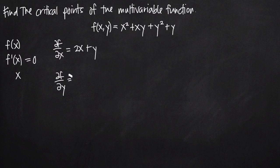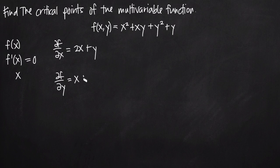For the partial derivative of f with respect to y, we treat y as the variable and hold x as a constant. The derivative of x squared is 0. For xy, x becomes a coefficient on the first-degree y variable, so the derivative of xy is just x. The derivative of y squared is 2y, and the derivative of y is 1.